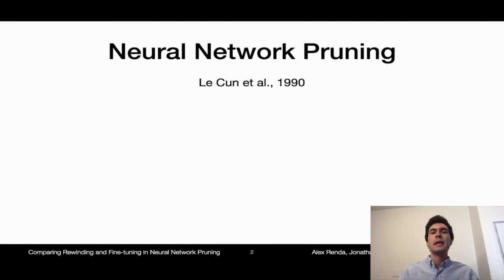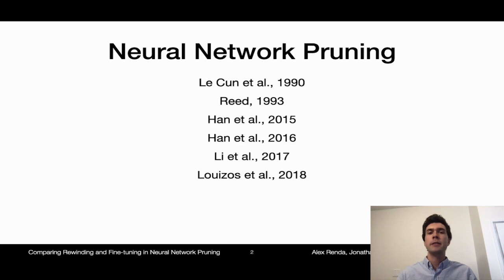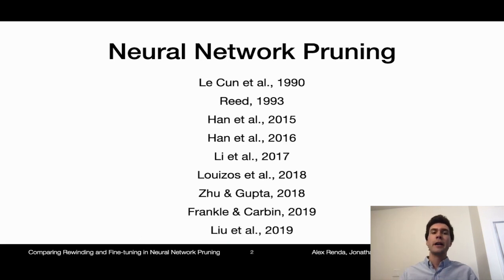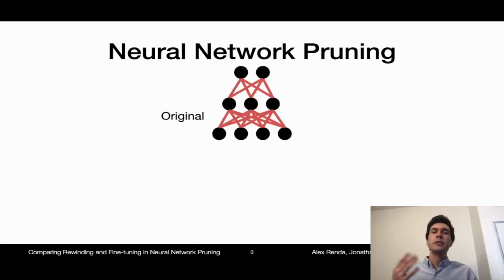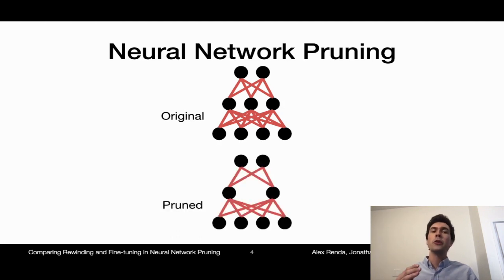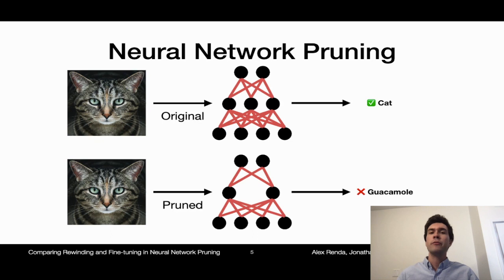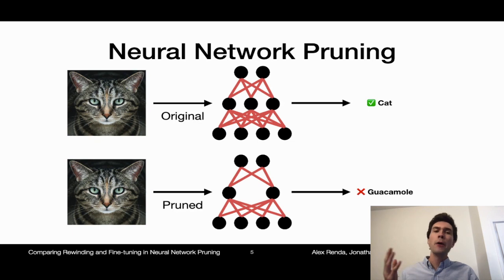Neural network pruning is a popular set of techniques dating back to the 90s, but recently brought back into fashion. Pruning typically starts with a pre-trained neural network and then removes individual connections or entire neurons from the neural network according to some heuristic, in order to improve computational efficiency. Neural network pruning changes the function represented by the neural net, damaging its accuracy. In practice, modern deep neural nets can be pruned by about an order of magnitude without any loss in accuracy, but beyond this point, accuracy does start to suffer.